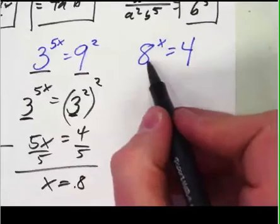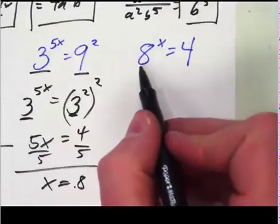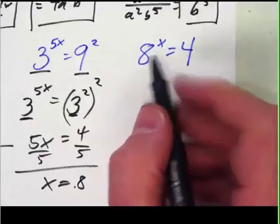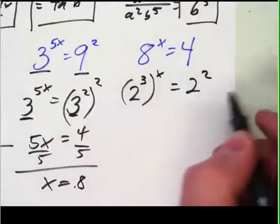And then the last one, eight to the x equals four, well neither of these can be powers of each other. The bigger one is typically the one we change, but that has to be a power of two to the x and this has to be a power of two.